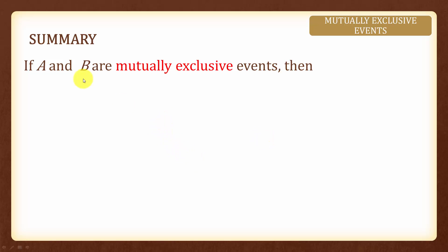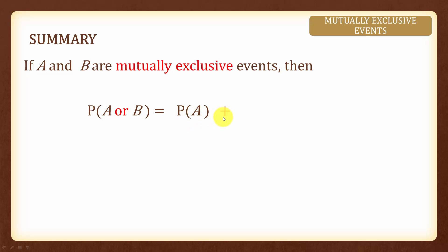In summary, if 2 events A and B are mutually exclusive, then the probability of getting A or B is equal to the probability of getting A plus the probability of getting B. In other words, if the 2 events are mutually exclusive and we have the word OR, we can add up the probabilities of the 2 events.